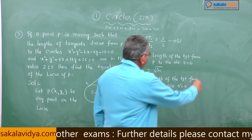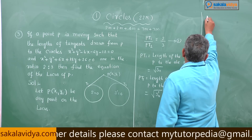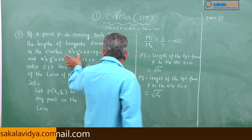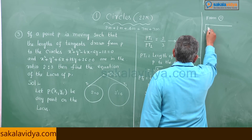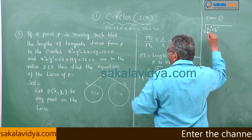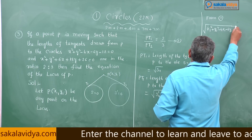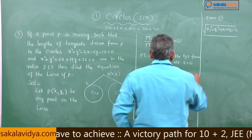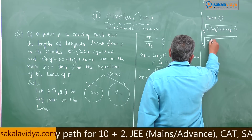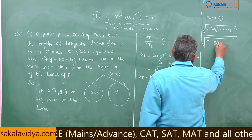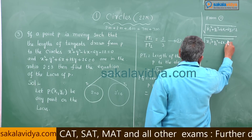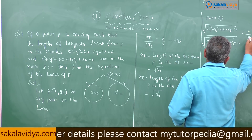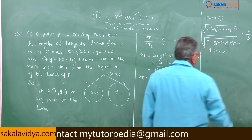Now substituting Pt₁ and Pt₂ values: √(x₁² + y₁² - 4x₁ - 6y₁ - 12) divided by √(x₁² + y₁² + 6x₁ + 18y₁ + 26) = 2/3. Now squaring on both sides.